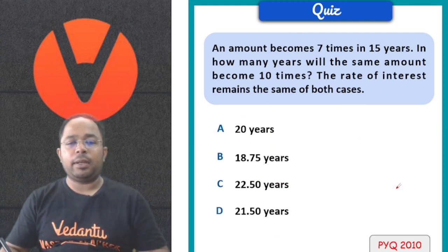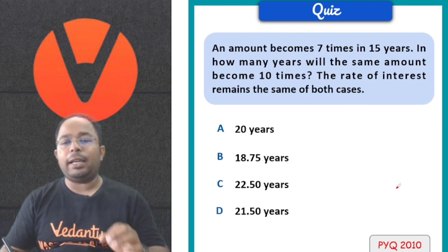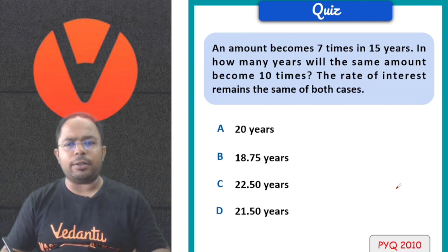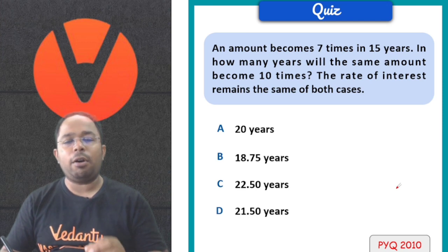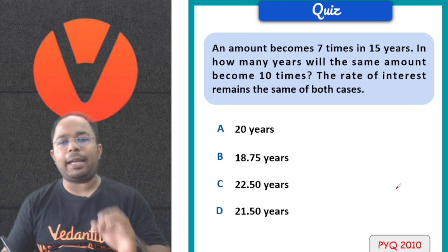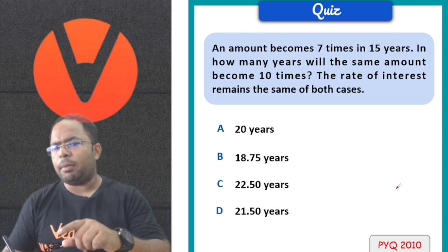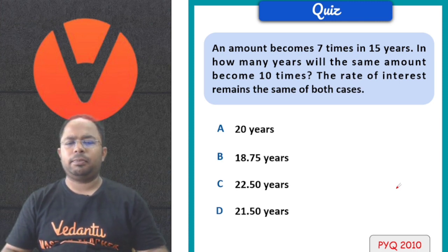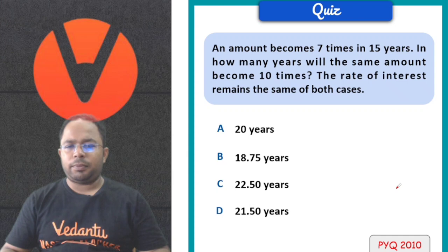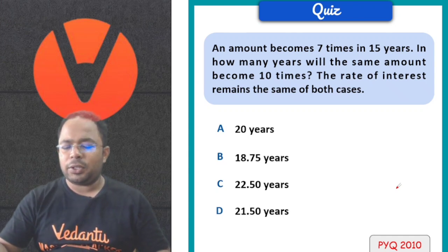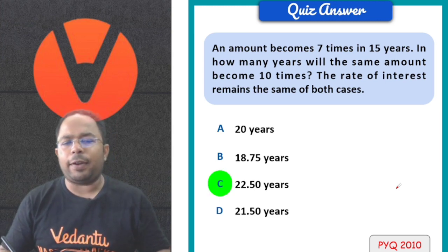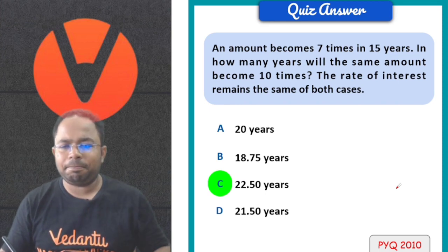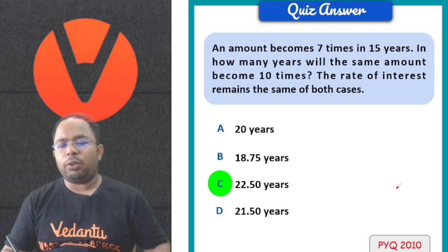Next question: An amount becomes 7 times in 15 years. In how many years will the same amount become 10 times, if the rate of interest remains the same in both cases? In how many years does the same amount become 10 times at the same rate of interest? Do it right now. The answer of this question is 22.5 years.